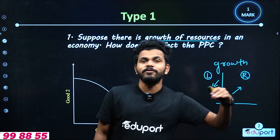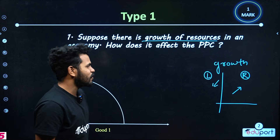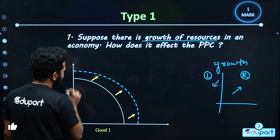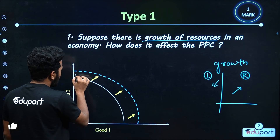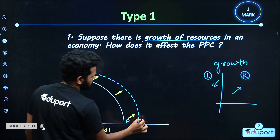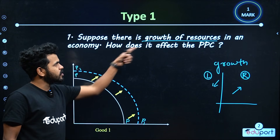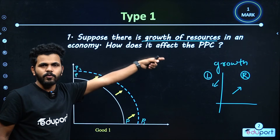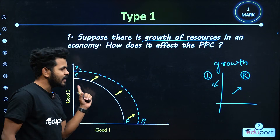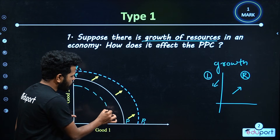If we have growth, we can shift to the right position. If we shift to the right position, that's the curve — the PPC curve. Then we can shift to the right position. If you have a wrong growth, you have to decline — that's one difference.